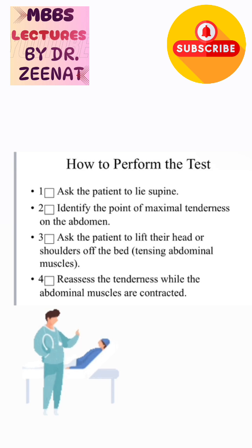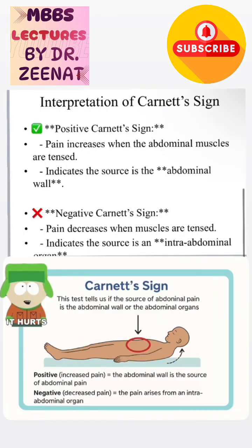Re-assess the tenderness while the abdominal muscles are contracted. Regarding interpretation of the Carnett Sign: if the source of the pain is the abdominal wall, the pain will increase when the abdominal muscles are tensed. When the pain is from the intra-abdominal organs, there is decreased pain on tension of the abdominal muscles.